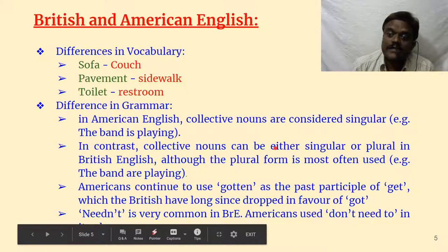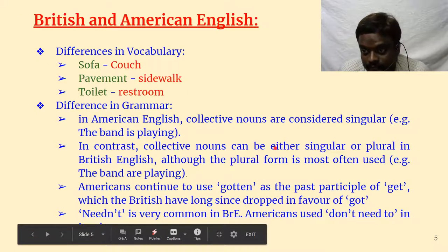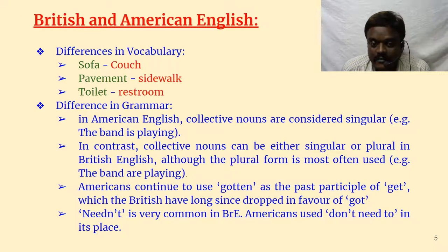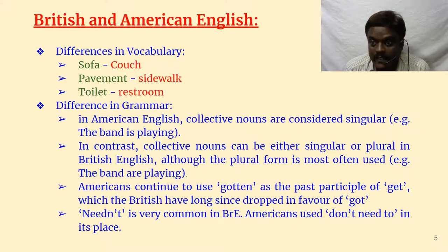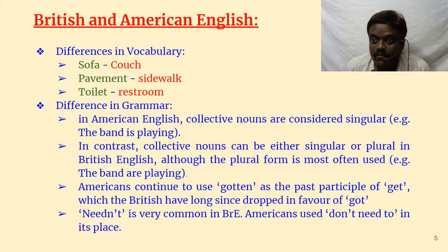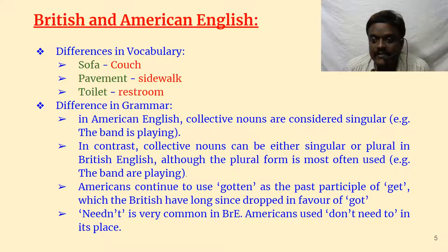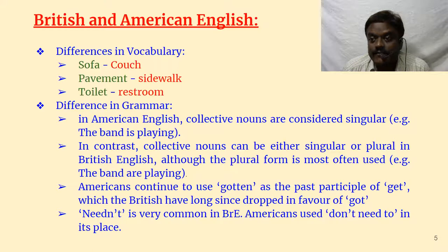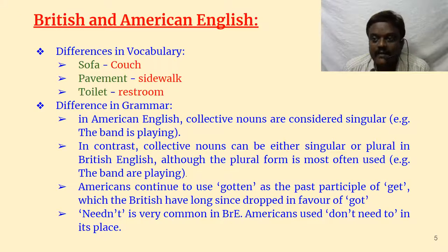Americans continue to use 'gotten' as a past participle of 'get' — get, got, gotten. For Britishers, the past participle is simply 'got.' Even though 'gotten' was once in British English, it is now archaic; you see it only in old poetry. But Americans still use 'gotten.' Similarly, 'needn't' is very common in British English as a helping verb — 'you needn't come' — whereas Americans say 'I don't need to.'